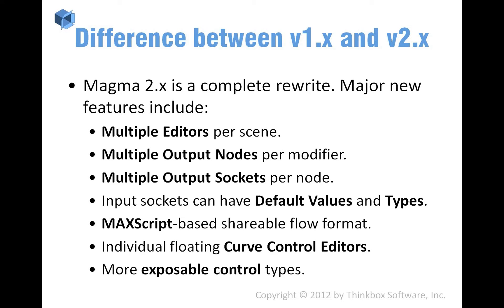You can have multiple output nodes in a modifier, which means you can calculate something once and then output the result to multiple channels. For example, you might want a value calculated from velocity to go to color, emission, and viewport color with different or similar values — you can calculate once and output to three or more channels at once. In the past with version 1.6, you had to add multiple modifiers and calculate the same thing again and again.